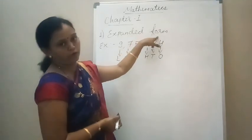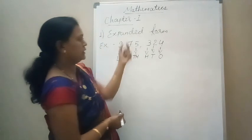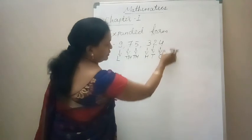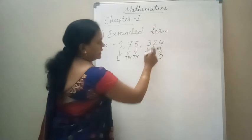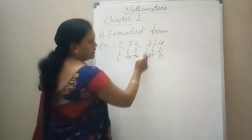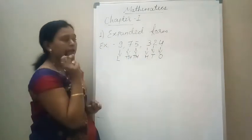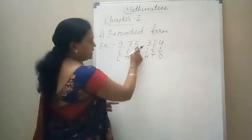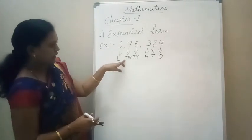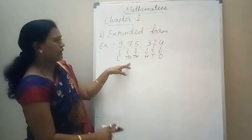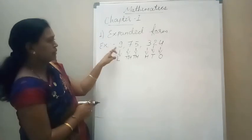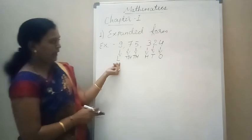For writing the expanded form, we require the place value of each digit. So, 4 is at ones — the place value of 4 is 4. 2 is at tens — the place value of 2 is 20. 3 is at hundreds — the place value of 3 is 300. 5 is at thousands — the place value of 5 is 5000. And 7 is at ten-thousands — the place value of 7 is 70,000.